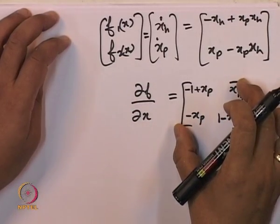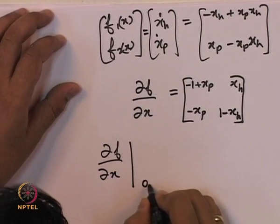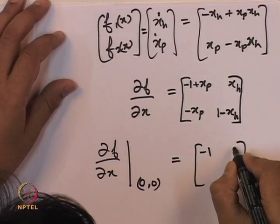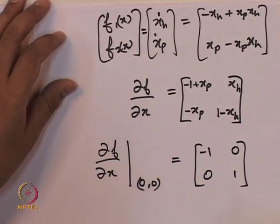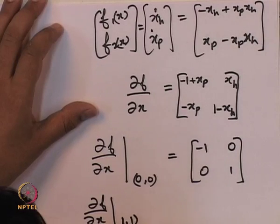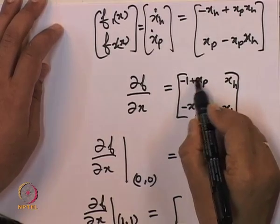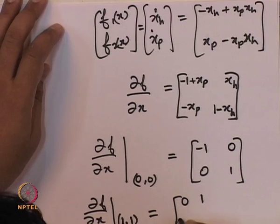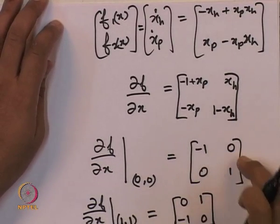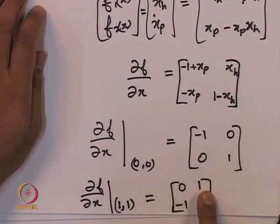We evaluate this matrix at each equilibrium point. At (0, 0): the Jacobian is the diagonal matrix [−1, 0; 0, 1]. At (1, 1): substituting xp = 1 and xh = 1 gives [0, 1; −1, 0]. These are our two A matrices for the two equilibrium points.